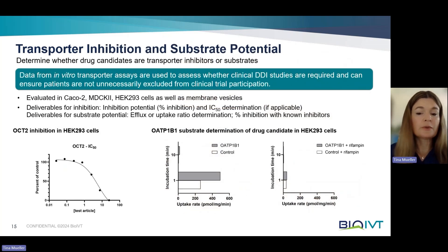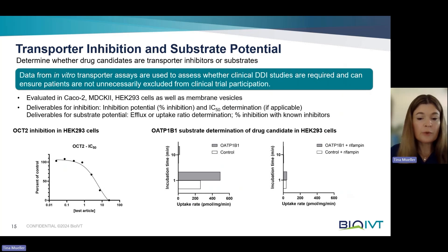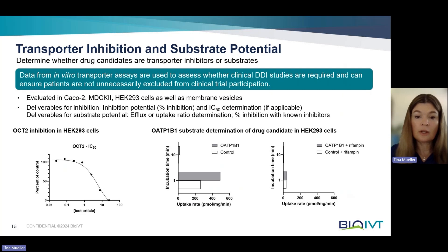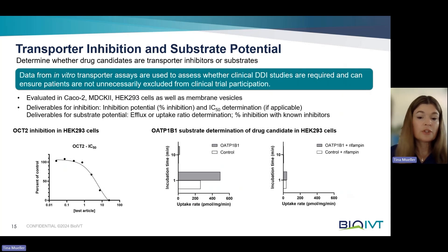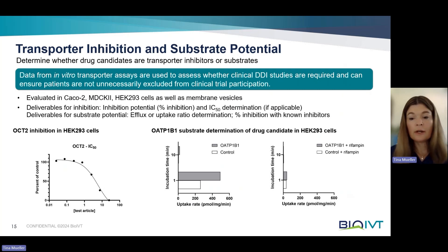Drug candidates can either inhibit transporters or be transported themselves. So transporter studies determine whether drug candidates are transporter inhibitors or substrates. Data from transporter studies are used to figure out whether clinical DDI studies are needed, and a second purpose is to make informed decisions about whether patients can be enrolled in clinical trials if they take other medications. These studies are typically conducted in cells — different cell lines used include Caco-2 (human colon cancer cells), MDCK2 cells (canine kidney cells), or HEK293 cells (human embryonic kidney cells). The latter two cell lines are either stably or transiently transfected and express the transporter of choice. In addition, some transporter studies are performed using vesicles.